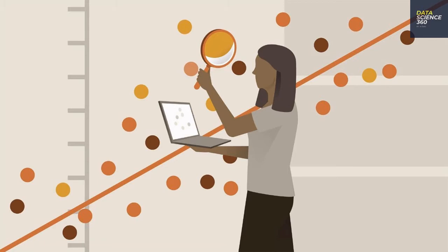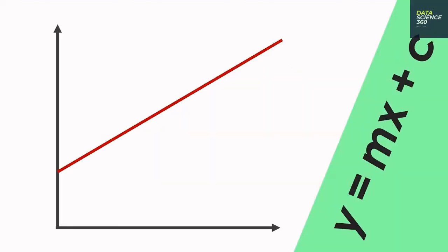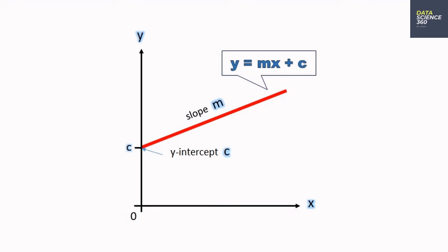We can simply draw a line that can pass through these points and find the income for unknown X values. Sounds simple, right? But the problem is we can draw many such lines that can pass through these points, and we have to find the best fit line. Here is the equation of a line: Y equals MX plus C. Do not freak out if you don't know mathematics — this is going to be a simple overview. In this equation, Y is the income, X is the experience, and M and C are the slope and intercept. We need to adjust M and C so it becomes the best fit line.